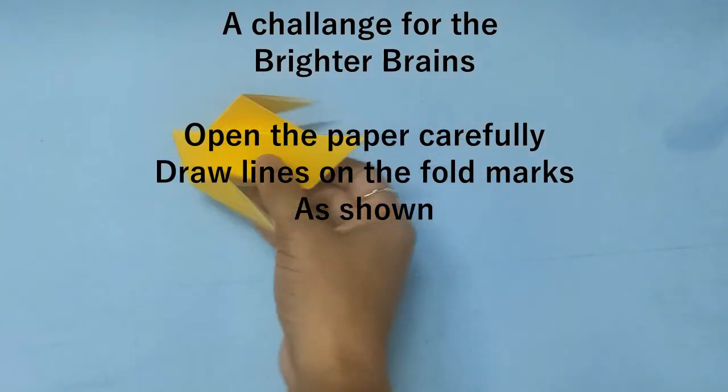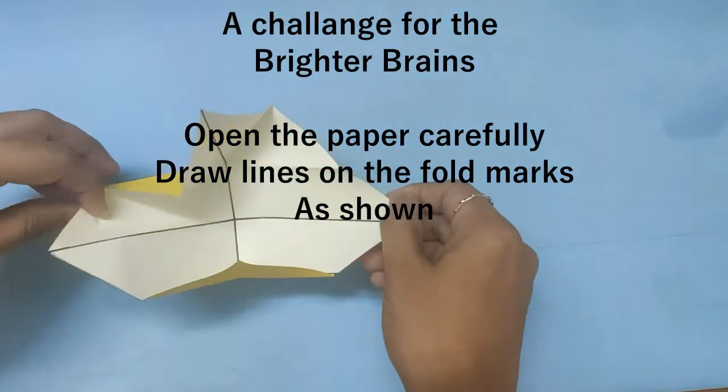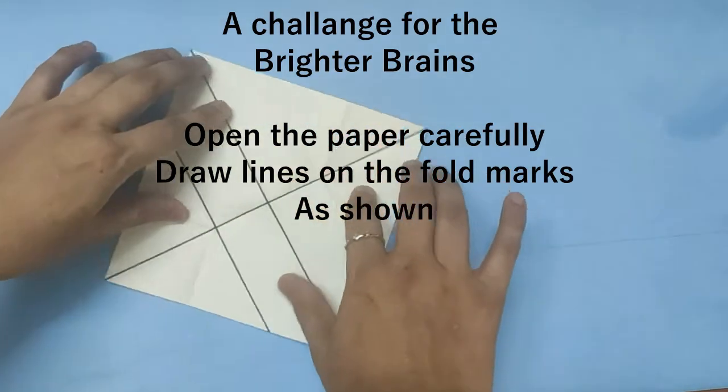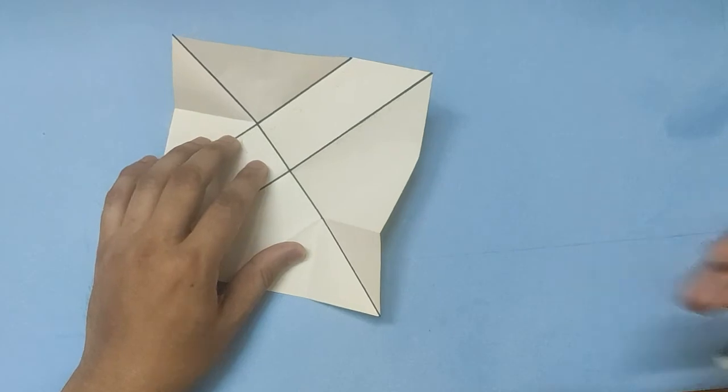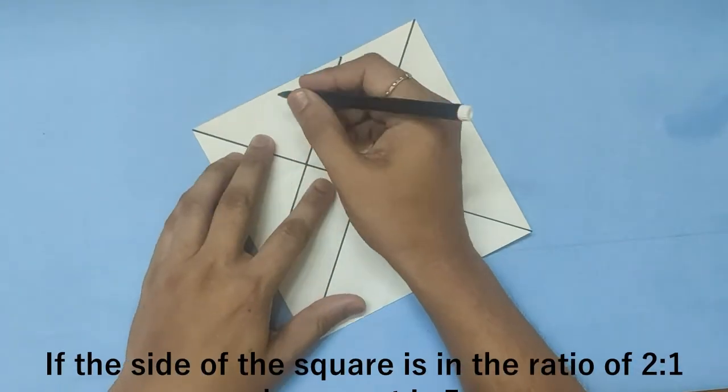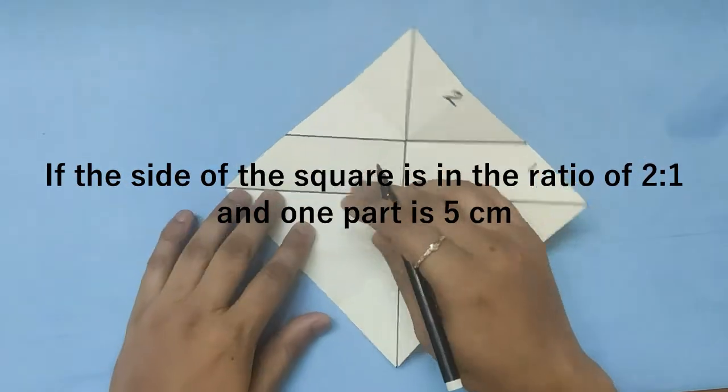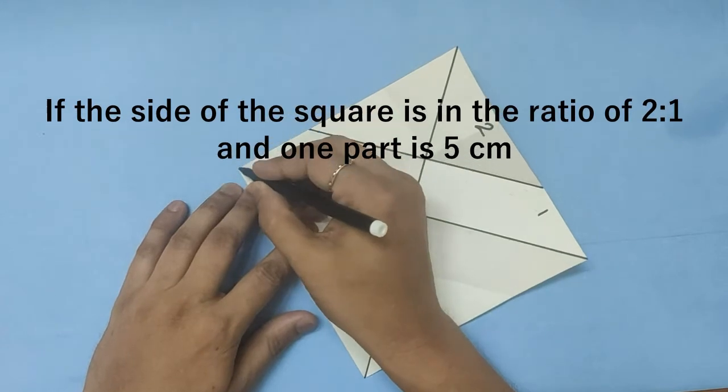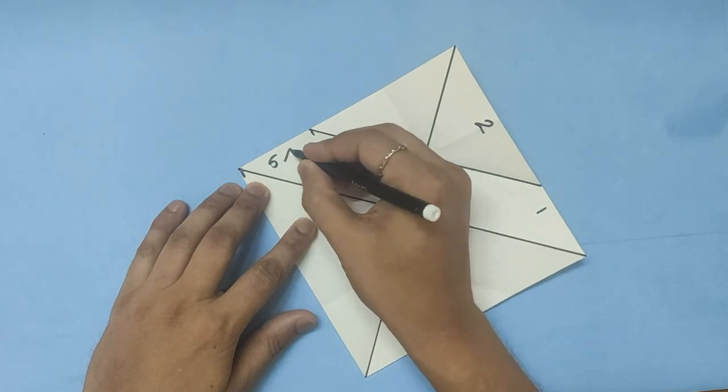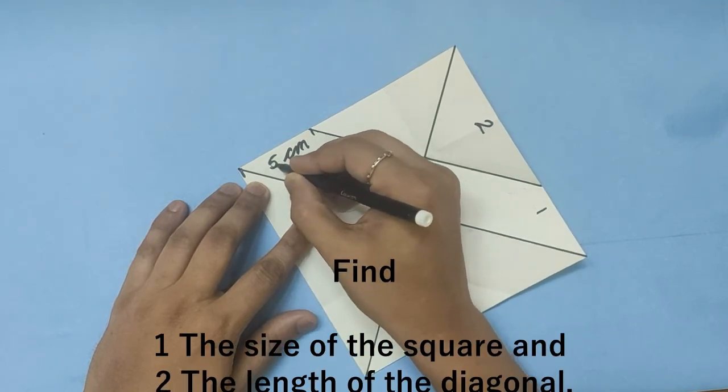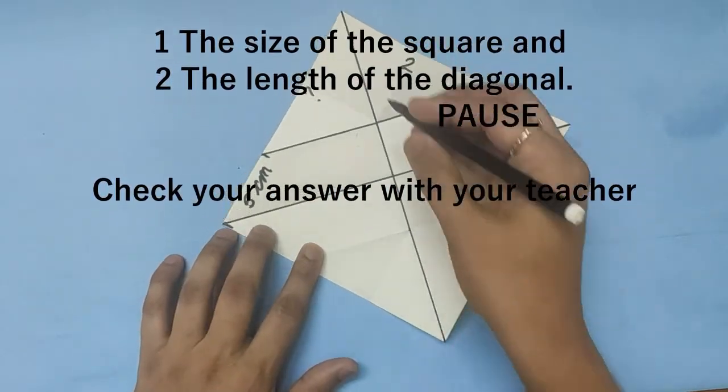A challenge for the brighter brains: open the paper carefully and draw lines on the fold marks as shown. Supposing the side of the square is in the ratio of 2:1 and one part is 5 centimeters, find the size of the square I took and the length of the diagonal.